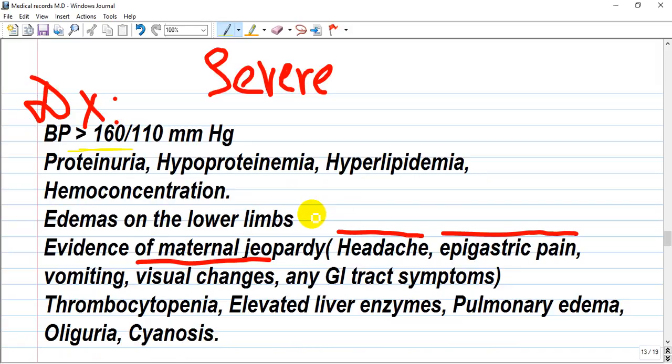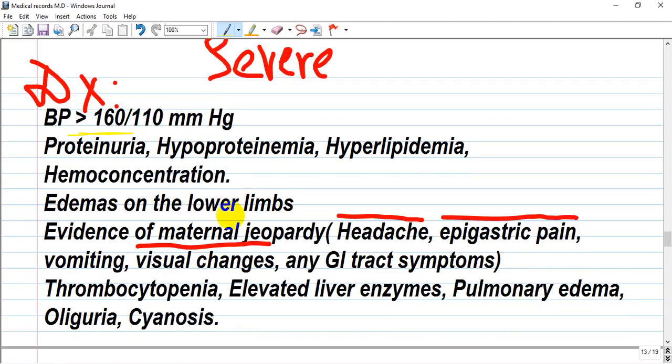Edema of the lower limbs from both causes, like increased circulating blood volume and from increased gravity pressure on legs. Also evidence of maternal jeopardy like headache, epigastric pain, vomiting, visual changes and any GI tract symptoms. Memorize any of the headache, epigastric pain and visual changes - it is very important to distinguish from mild preeclampsia. Also you can see on lab tests thrombocytopenia, elevated liver enzymes, pulmonary edema, oliguria and cyanosis.